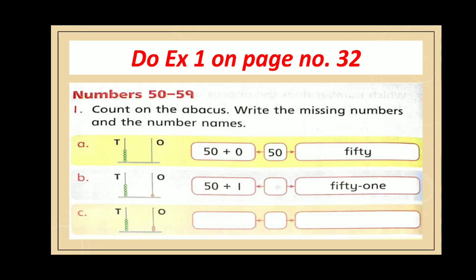Now open page number 32 and do exercise 1. Numbers from 50 to 59. Count on the abacus, write the missing numbers and the number names. One has been done for you. Now complete the remaining part.